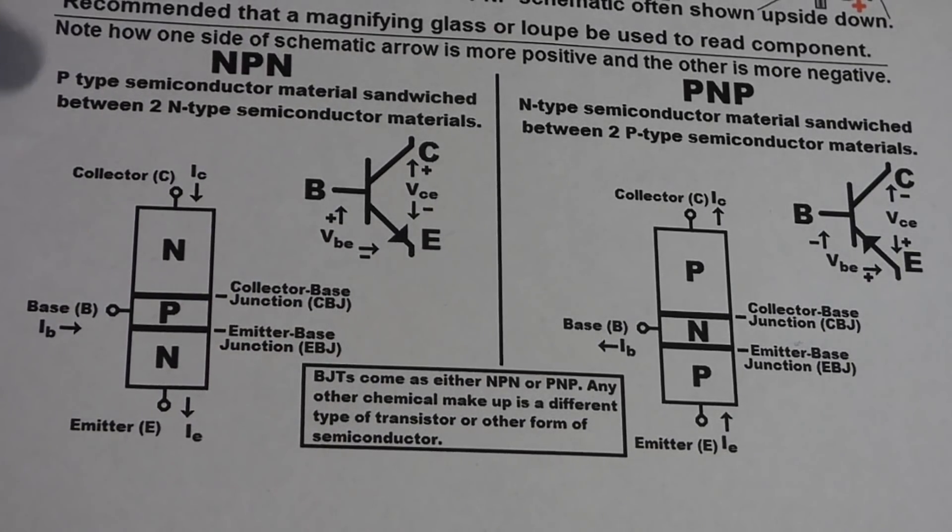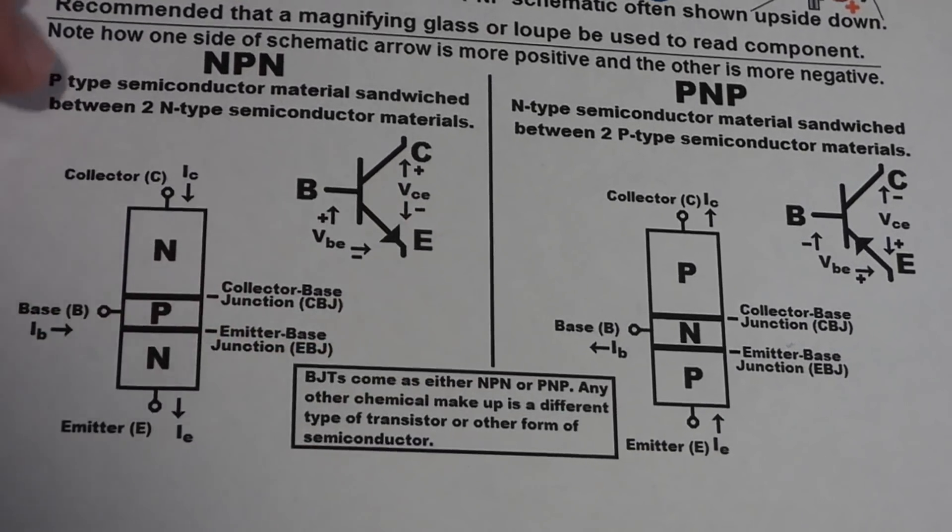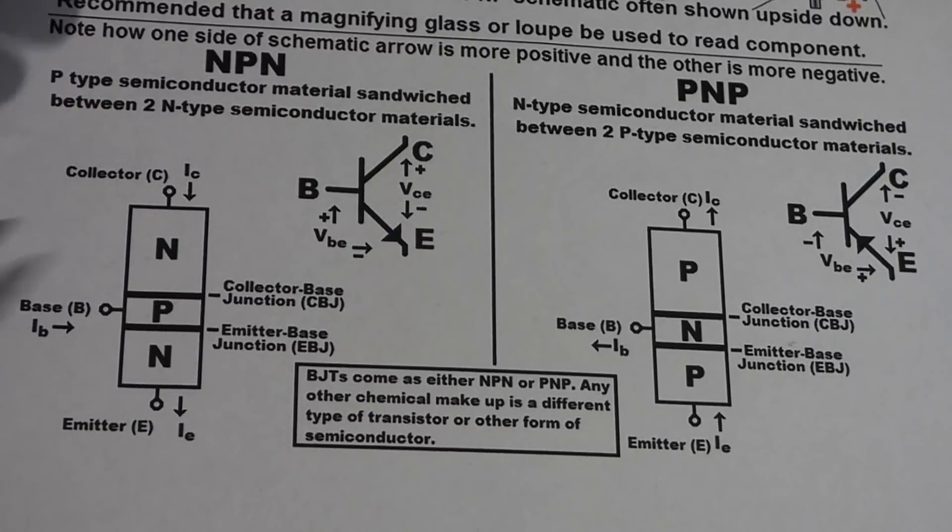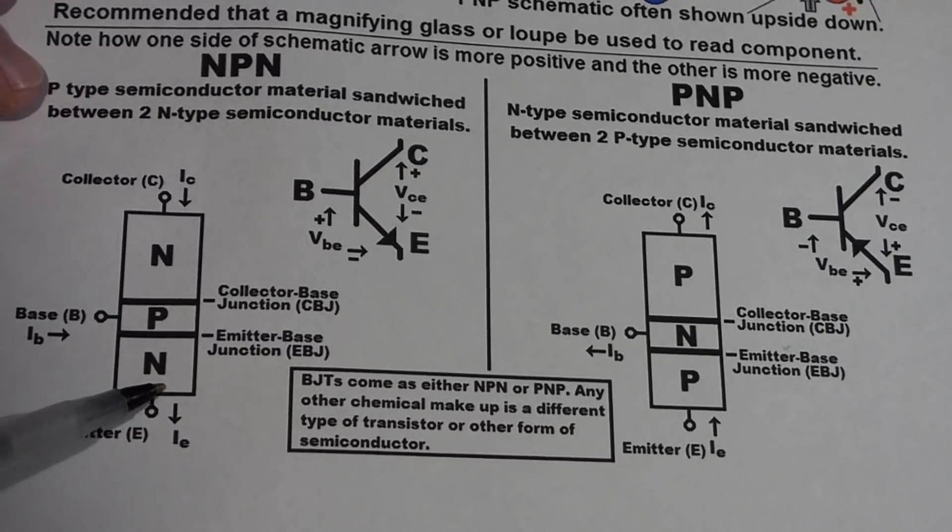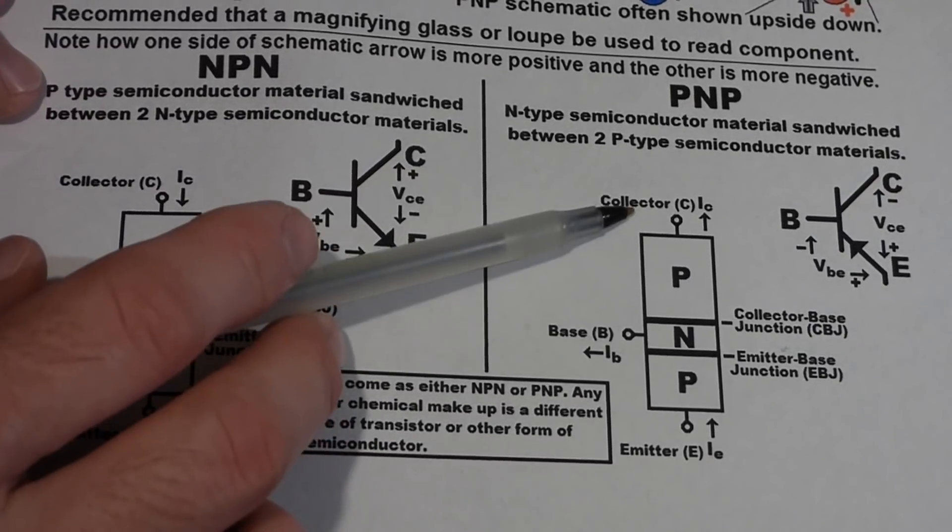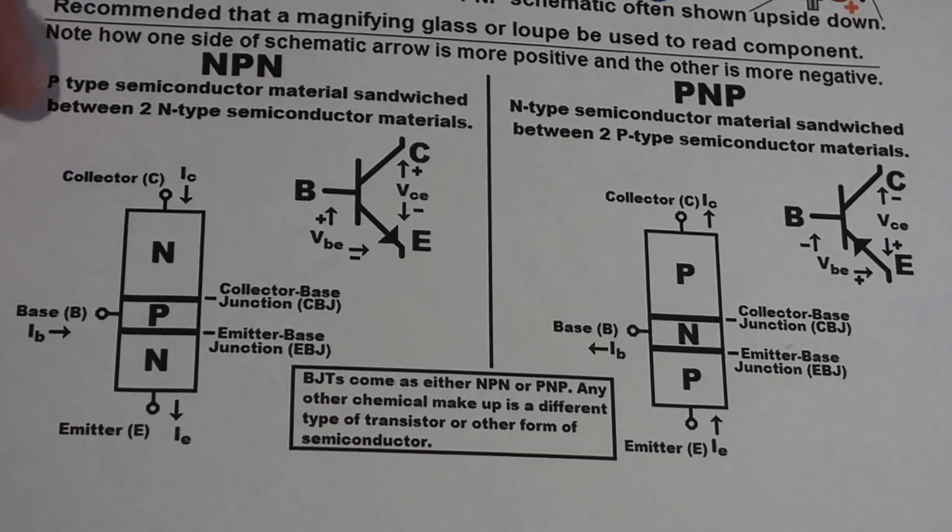And of course, the three parts of the bipolar junction transistor have names. So there's a collector, a base, and emitter. That's either for the NPN or the PNP. We have a collector, a base, and emitter.